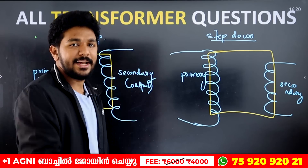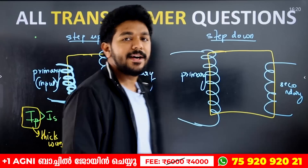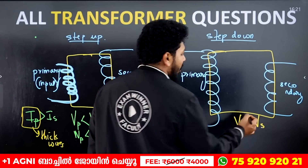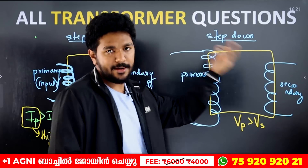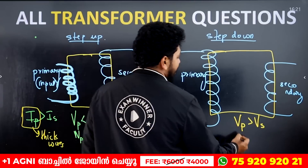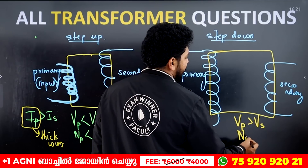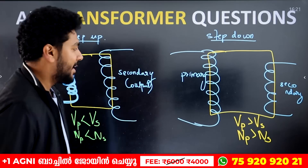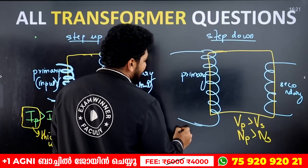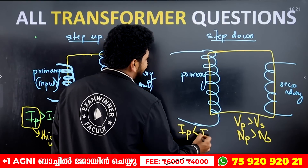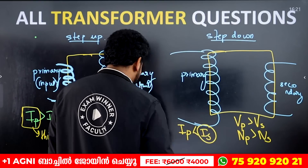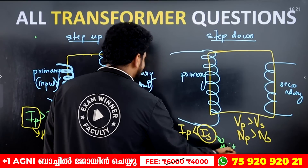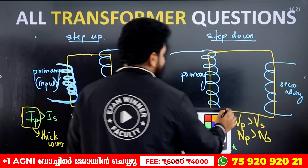A step-down transformer has a higher voltage in the primary. Primary voltage is greater than secondary voltage. The voltage in the input is greater than the output. The voltage is primary and the number of turns is primary. Primary current is less than secondary current. Therefore, thick wires are seen in the secondary of a step-down transformer.